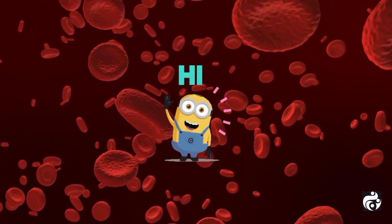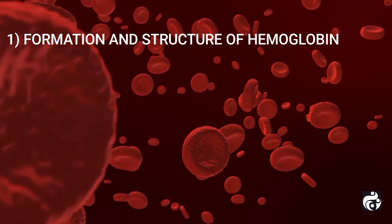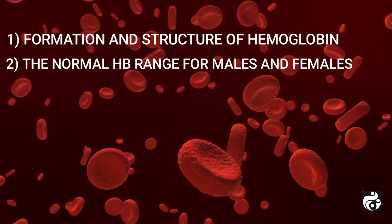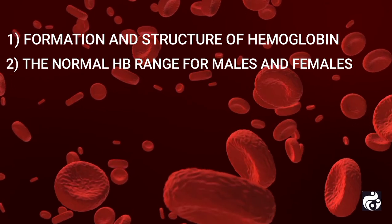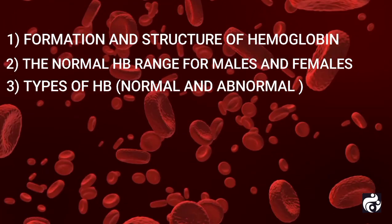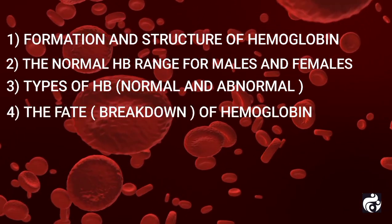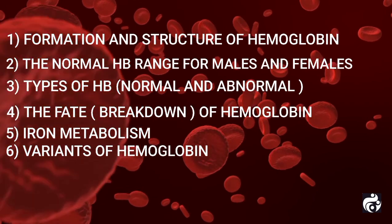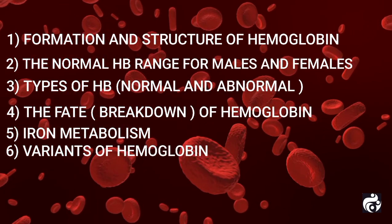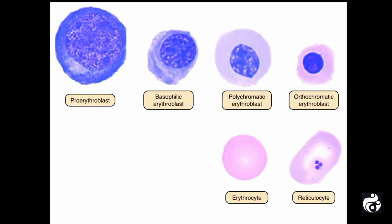Hello friends, today we are going to learn about the formation and structure of hemoglobin, the normal hemoglobin range for males and females, types of hemoglobin that is normal and abnormal, the fate that is breakdown of hemoglobin, iron metabolism, and variants of hemoglobin. Now let's start with the formation of hemoglobin. Synthesis of hemoglobin begins in the polychromatophil erythroblast.